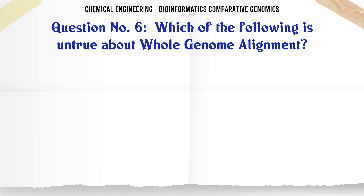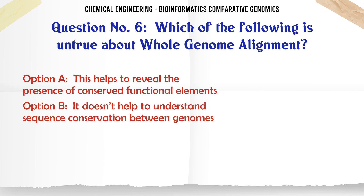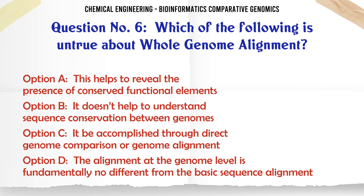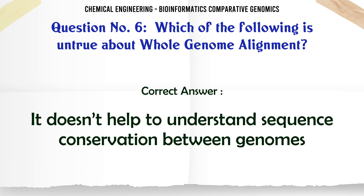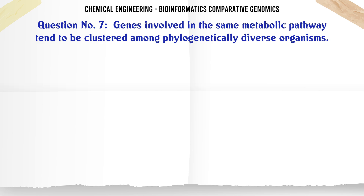Which of the following is untrue about whole-genome alignment? a. This helps to reveal the presence of conserved functional elements. b. It doesn't help to understand sequence conservation between genomes. c. It can be accomplished through direct genome comparison or genome alignment. d. The alignment at the genome level is fundamentally no different from the basic sequence alignment. The correct answer is: it doesn't help to understand sequence conservation between genomes.